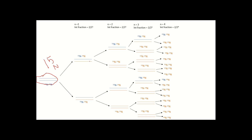After one generation in ¹⁴N medium, each cell produces one ¹⁵N/¹⁴N duplex. This is because the parental ¹⁵N strand acts as a template, and the newly synthesized daughter strand is ¹⁴N — since the nucleotides in the ¹⁴N medium are labeled with ¹⁴N. Both daughter duplexes from generation one are therefore ¹⁵N/¹⁴N.